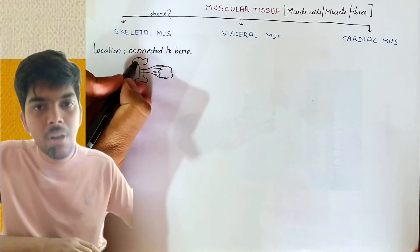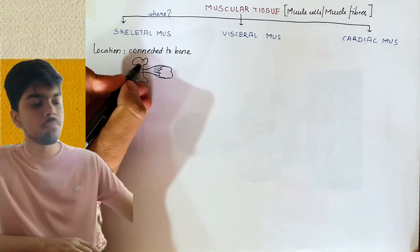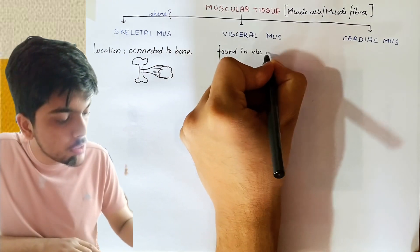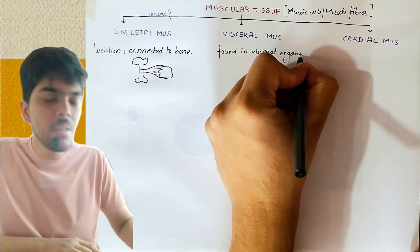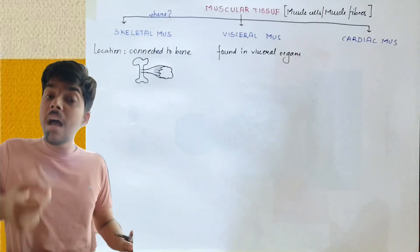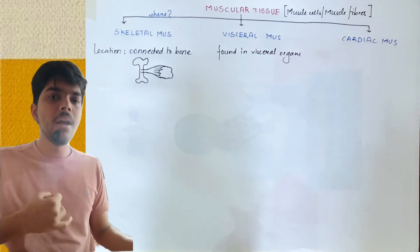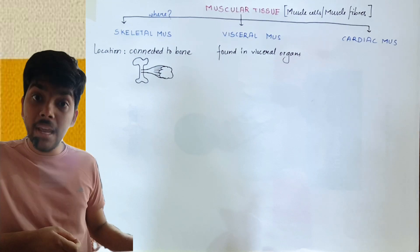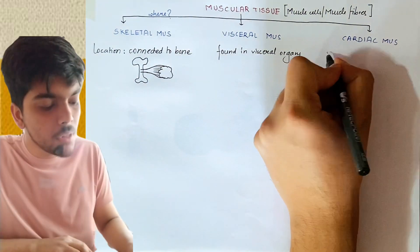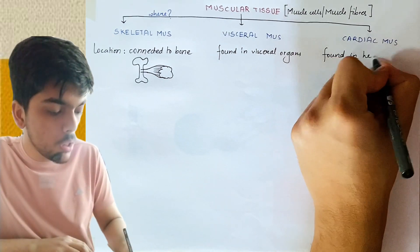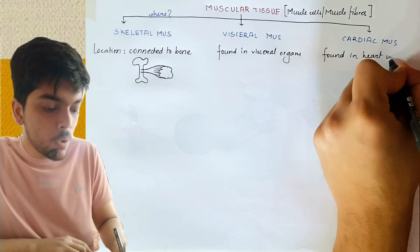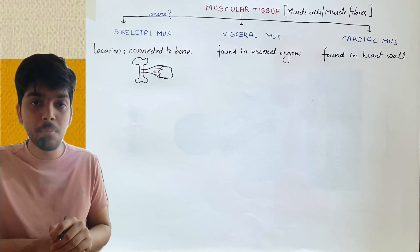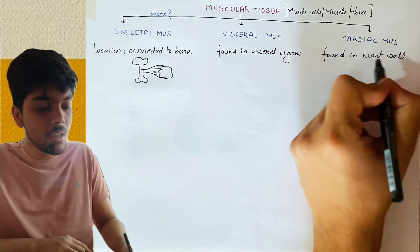Skeletal muscle, along with the bone, helps in movement and locomotion. Second, visceral muscle. Visceral muscle is found in visceral organs — the internal organs found inside your body — such as the stomach, intestine, and blood vessels. Finally, cardiac muscle is found in the heart wall. The pumping of blood by the beating of the heart is possible due to the contraction and relaxation of the cardiac muscle present in the heart wall.